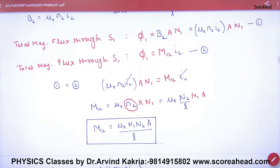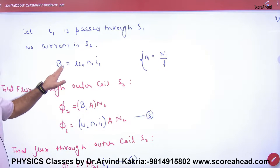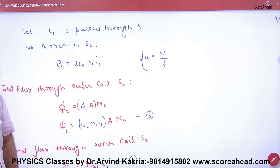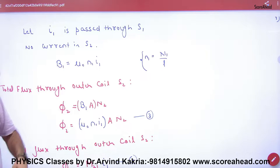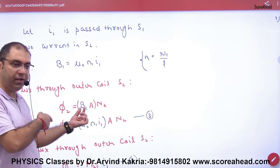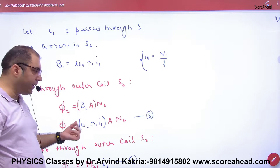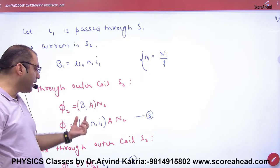Now you might ask, how do we know which is primary, which is secondary? Let's reverse it. Let's do the derivation again. This time, where did I pass current? In S1. How much current? i1. So I generated B in S1: μ₀ N1 i1. Now S1 becomes primary. Whose flux will change? S2's. Secondary's flux: B into area, B of S1. Put this B1 value here.